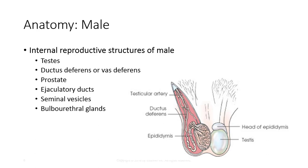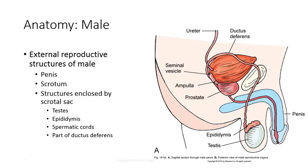The internal reproductive structures of the male include the testes, the ductus deferens, the prostate gland, ejaculatory ducts, seminal vesicles, and the bulbourethral glands. The external reproductive structures of the male include the penis and the scrotum. Structures enclosed by the scrotal sac include the testes, epididymis, the spermatic cords, and part of the ductus deferens.